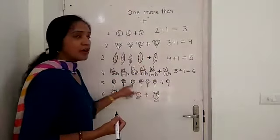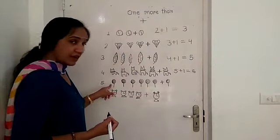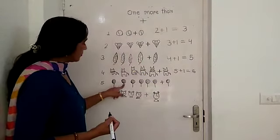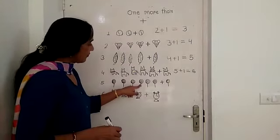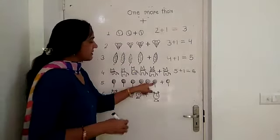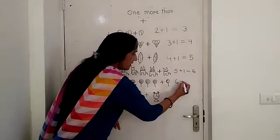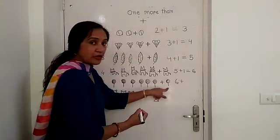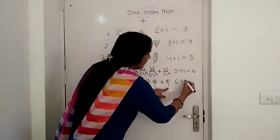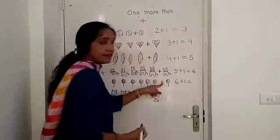And these are lollipops. Let's count. One, two, three, four, five, six. Plus I got one more, one. Equals seven.